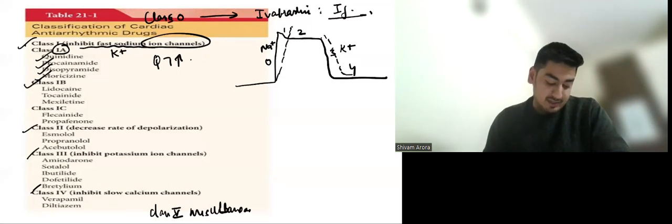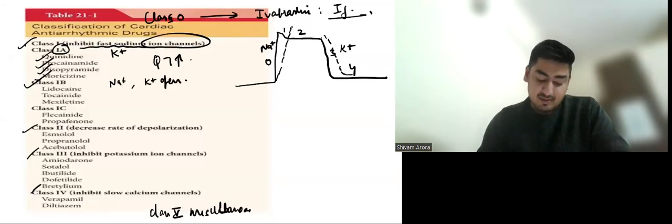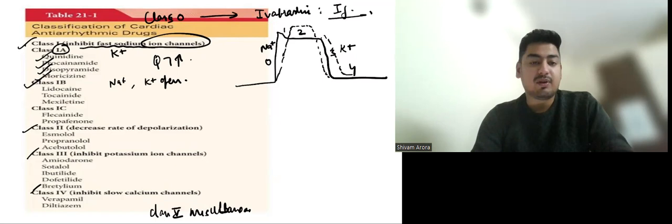Class 1B agents, they block sodium channels, but they open potassium channel. So now, since they open potassium channel, they will delay depolarization, but they will make repolarization early. So they will not prolong QT. They can shorten the QT interval.